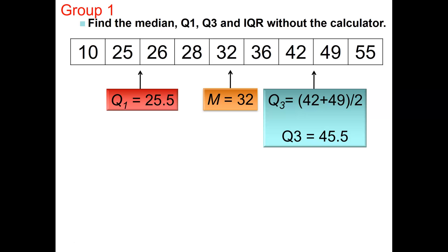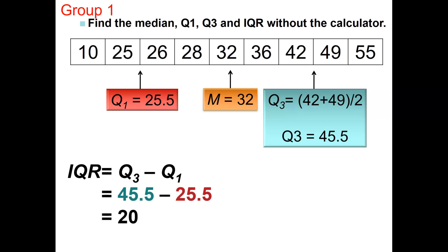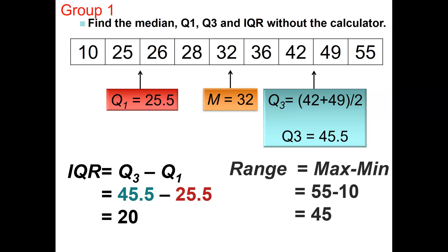Remember, there's 25% of the data in each box and whisker, and we'll talk about that more. The interquartile range is Q3 minus Q1, so 45.5 minus 25.5, which is 20. The range is the maximum minus the minimum — in this case, 55 minus 10, which is 45.